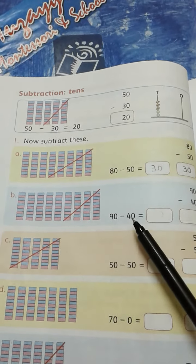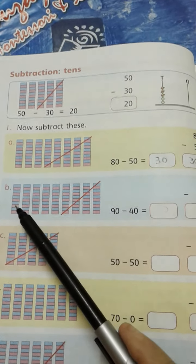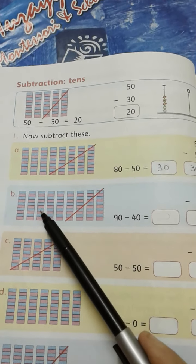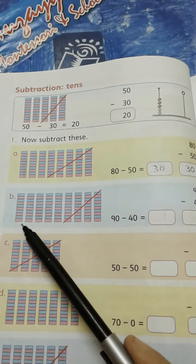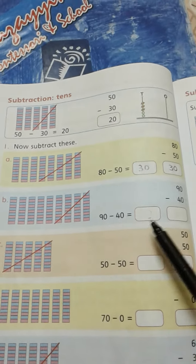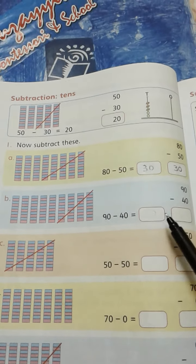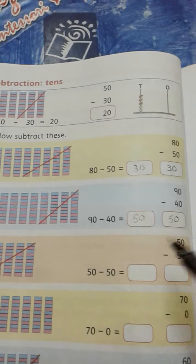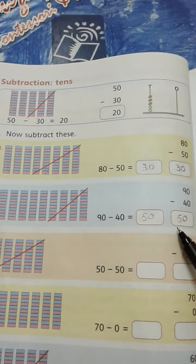So let's see how many tens are left over here. Let's count: 1, 2, 3, 4, 5. Sorry, 1, 2, 3, 4, 5. And 5 tens means 50. So we have to write 50 in these boxes. It means 90 minus 40 is equal to 50.